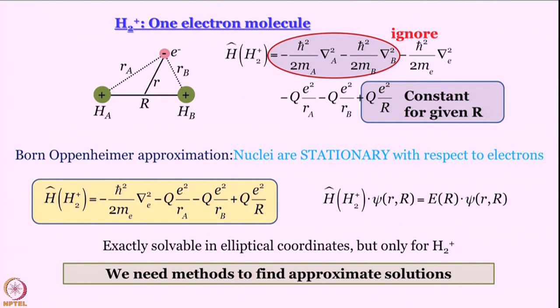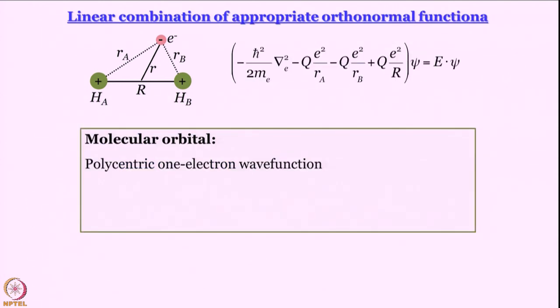We are going to use linear sums of these orbitals to find approximate solutions. Our interest here is to find electron distribution and energy. To do that, one common way is to take a linear combination of appropriate orthonormal functions. It is not even required to take orthonormal functions, but it is better if you take them, that makes life a little simpler.